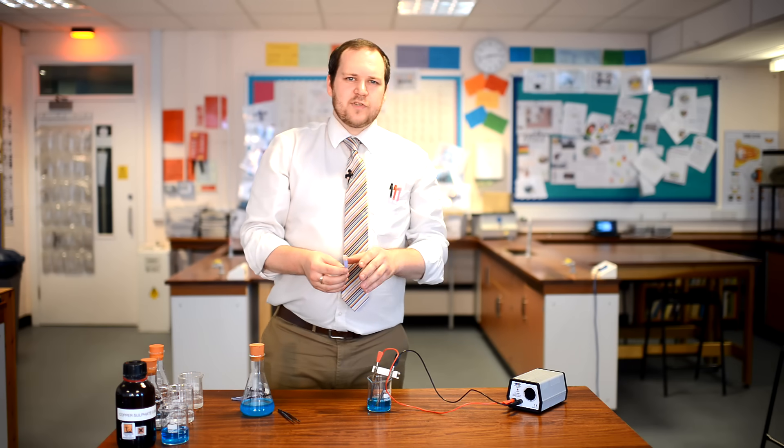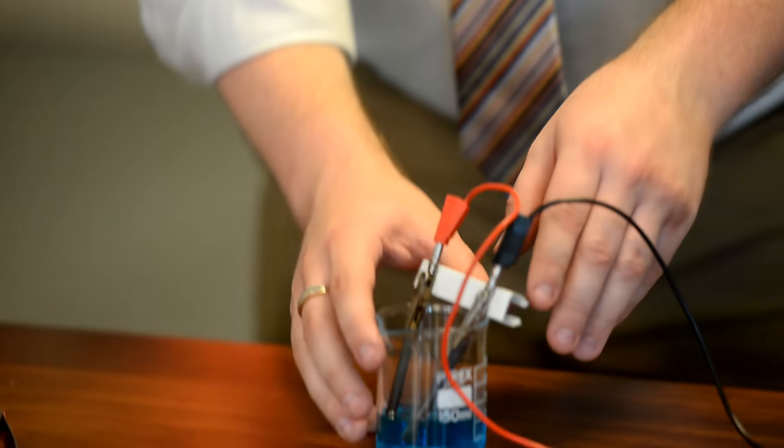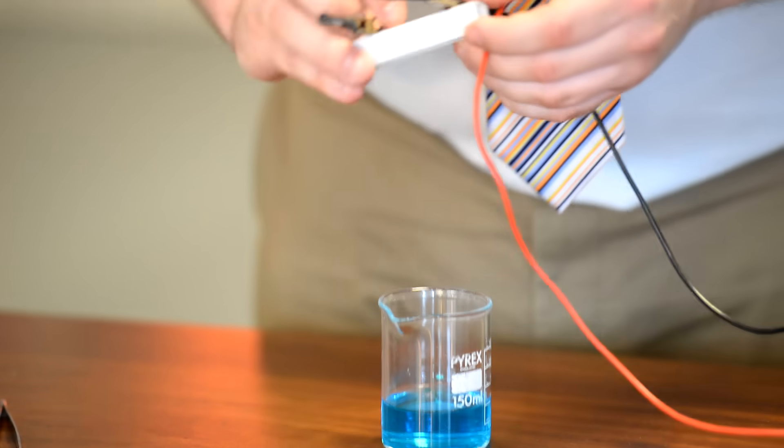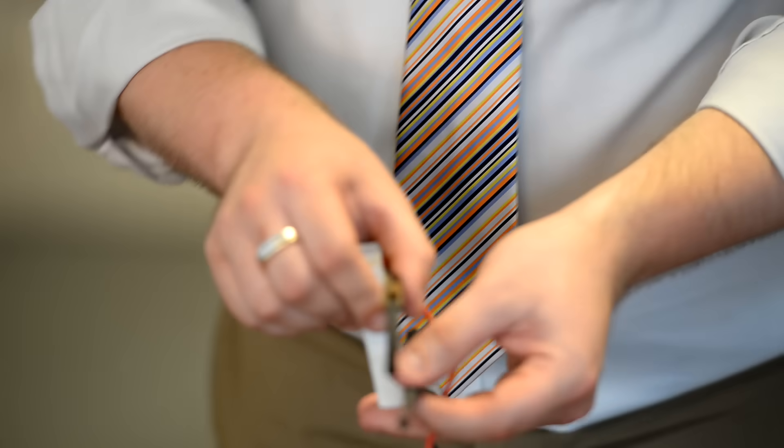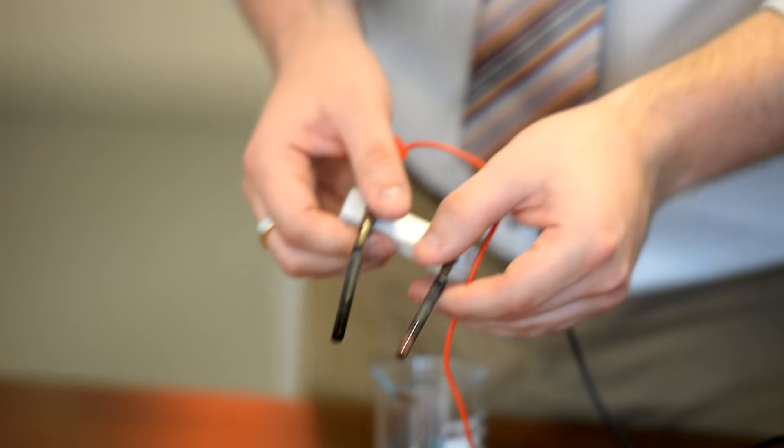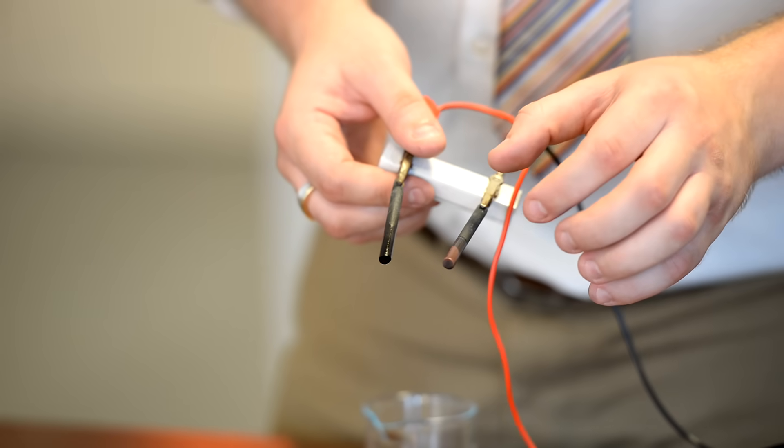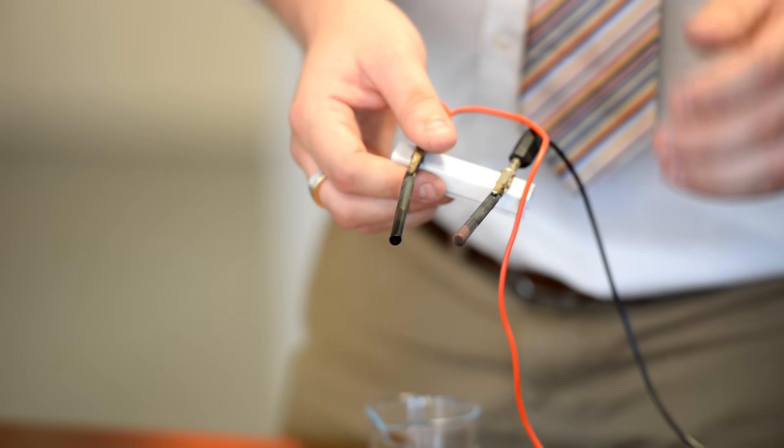At the cathode, I'll turn this off so we can see this, we should see that copper has started to form around the bottom of it, so where it was submerged in the copper chloride, copper metal crystal has formed from the copper ions.